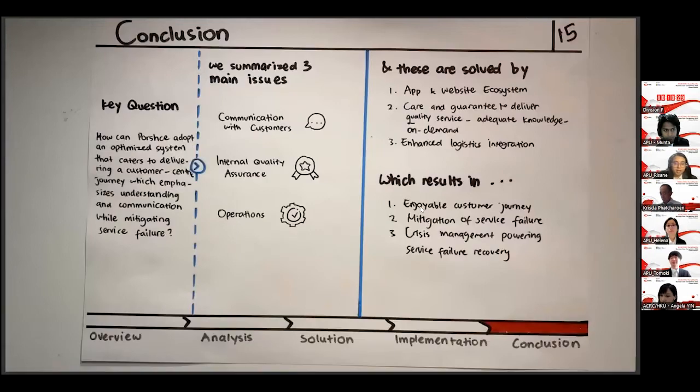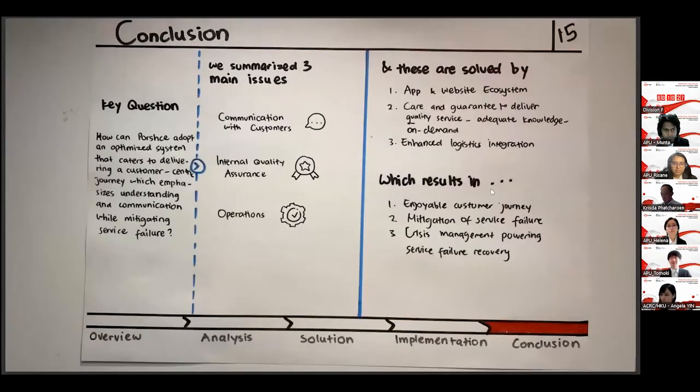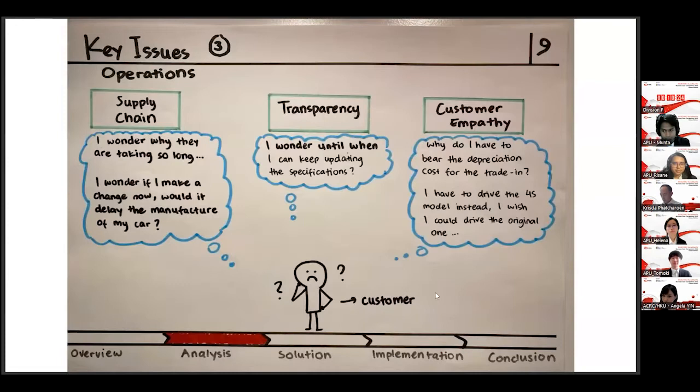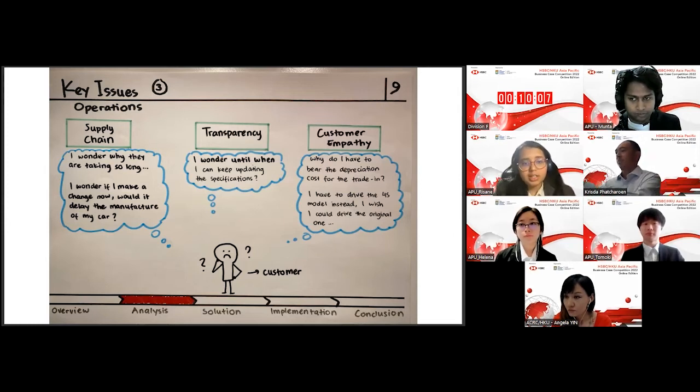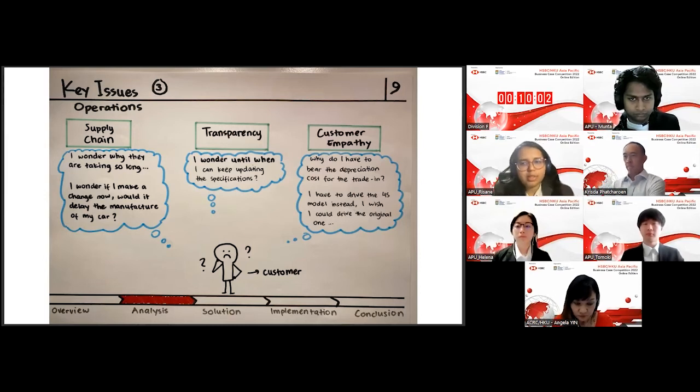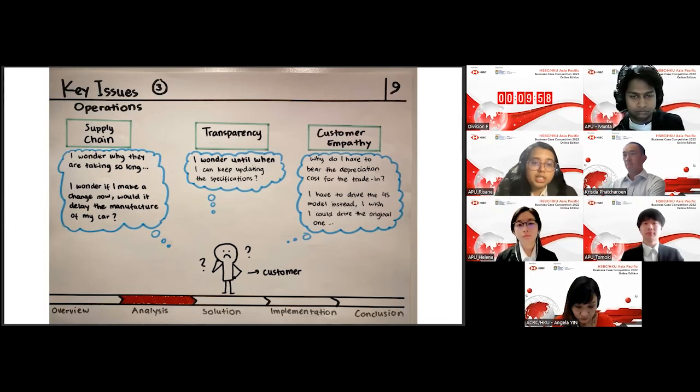Now we will be visiting the third and final key issue which is related to operations. Let's take a step back and look into the shoes of Paul, the customer. So the customer might be wondering, why is it taking so long for my dream car to come to my house? Secondly, they might also think, is it okay if I make a small change now? Would it really have an impact on the manufacturer of my car? This shows that there might be a supply chain issue.